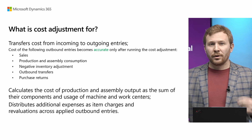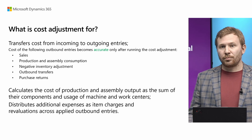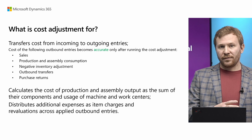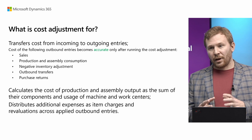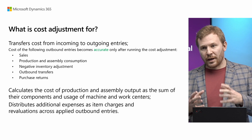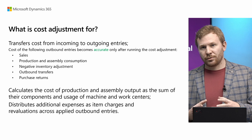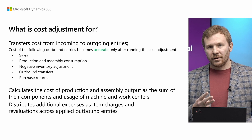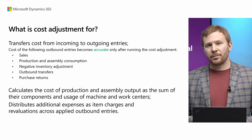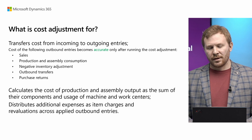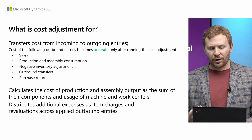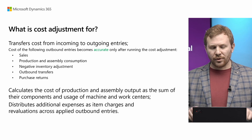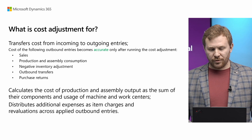Second, it calculates the cost of production and assembly output as a sum of their components, plus for production the capacity used for work and machine centers. And third, it distributes additional expenses such as item charges and revaluation down across outbound entries.